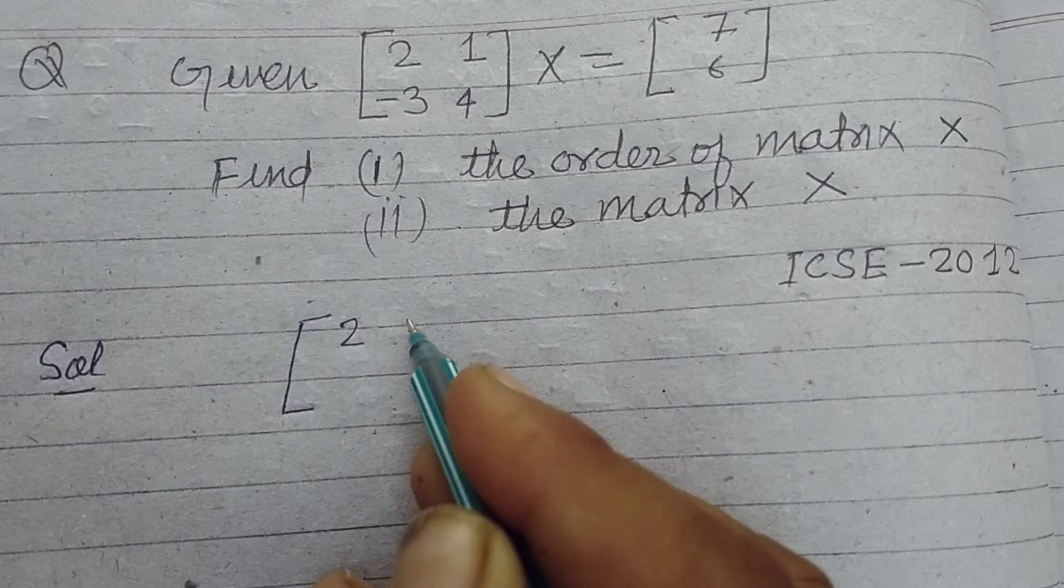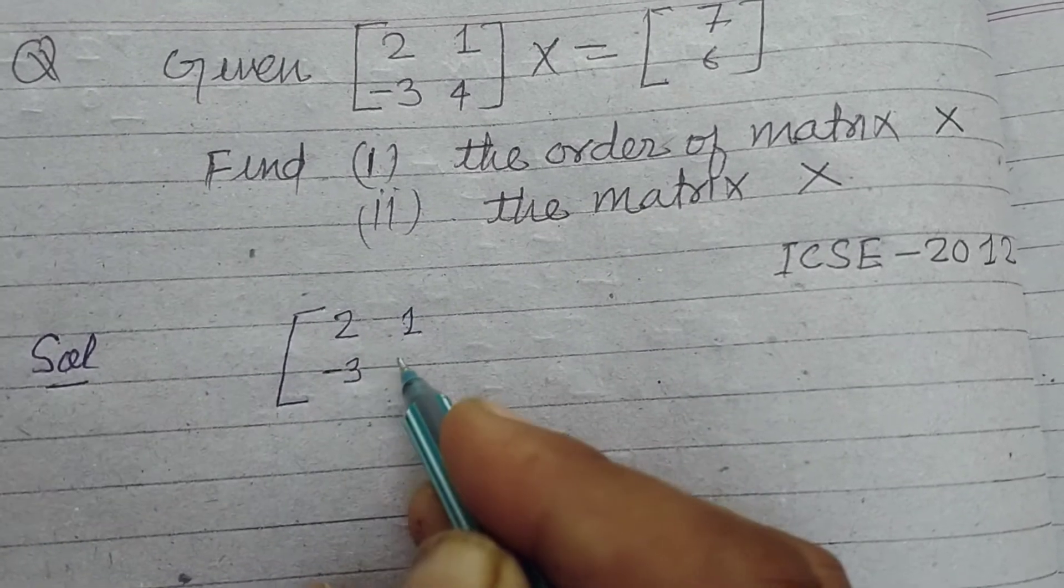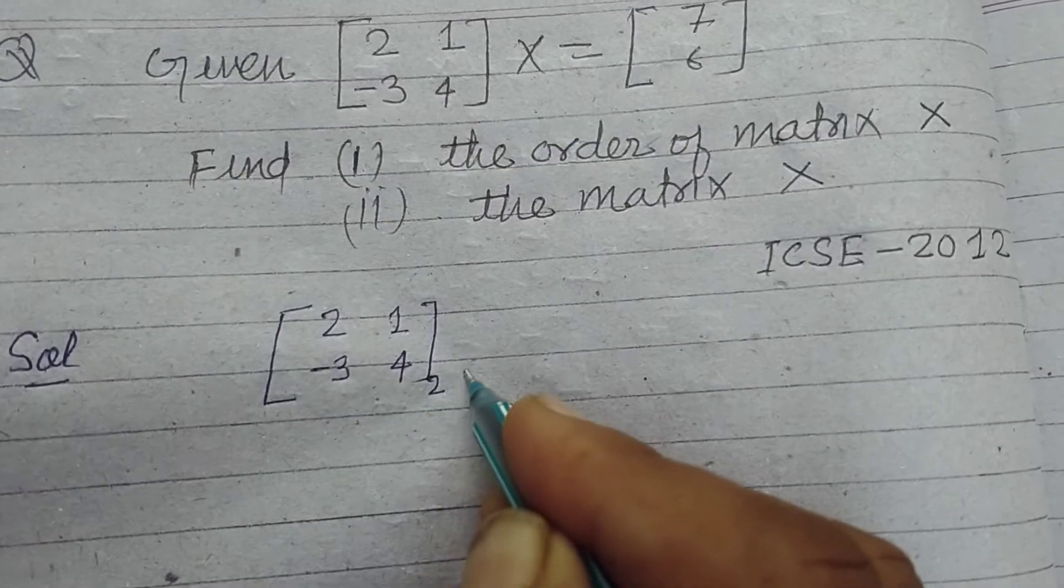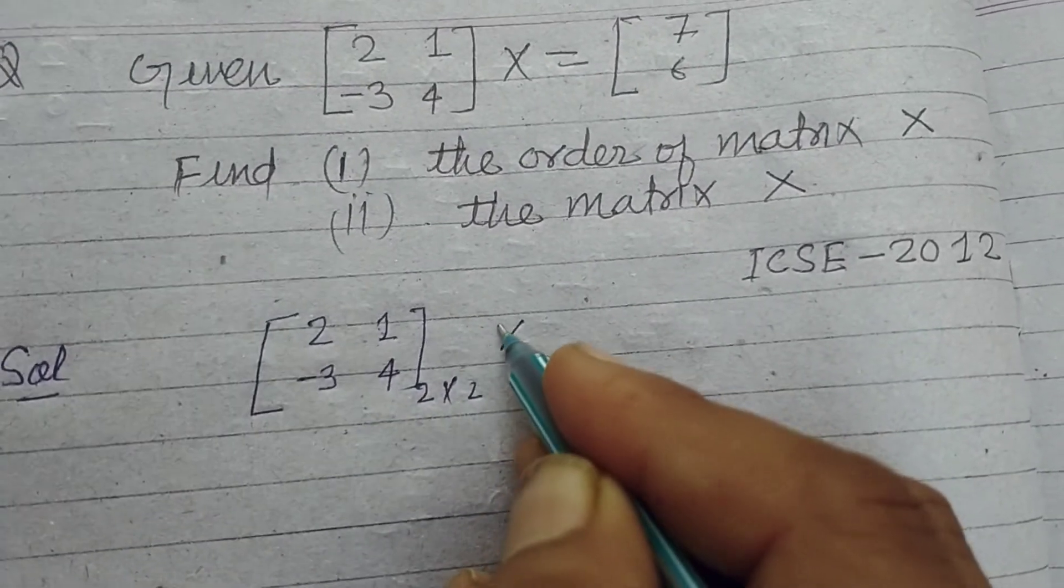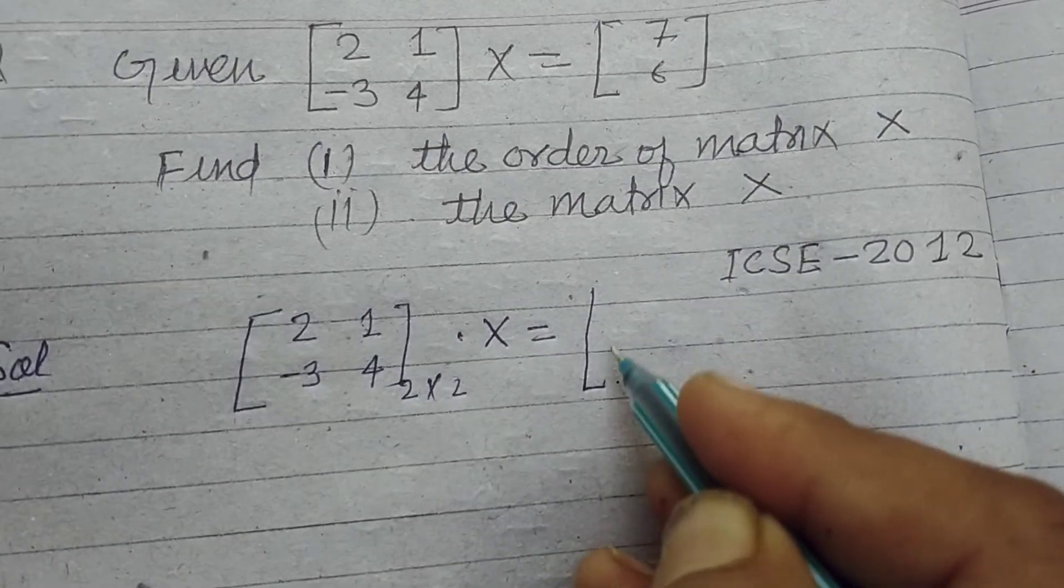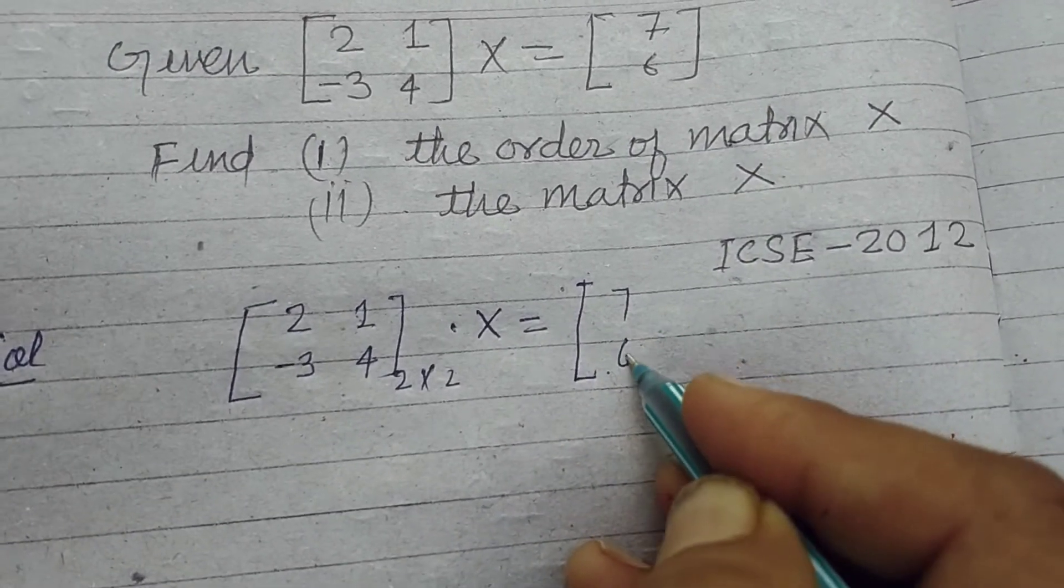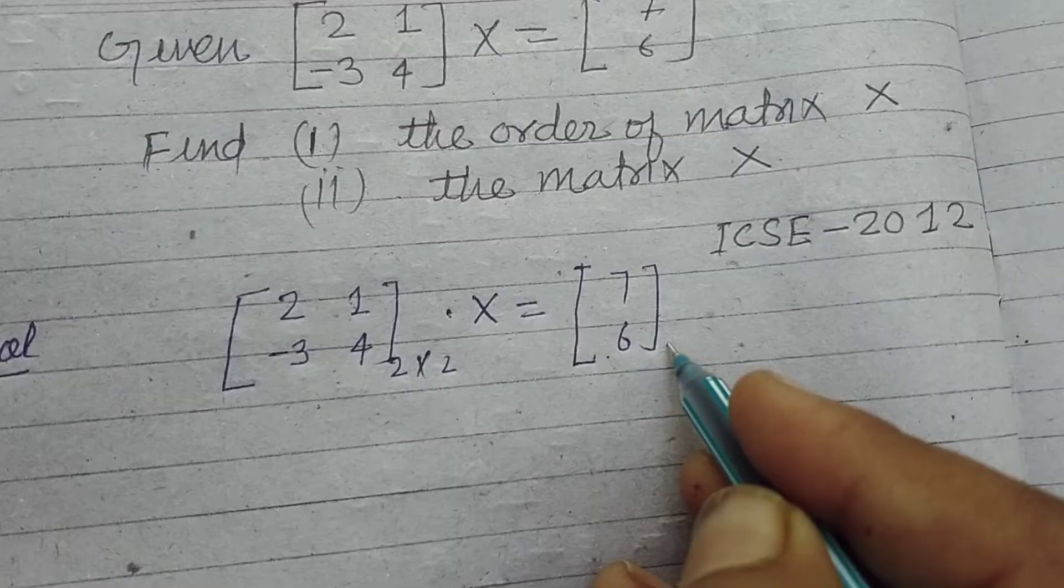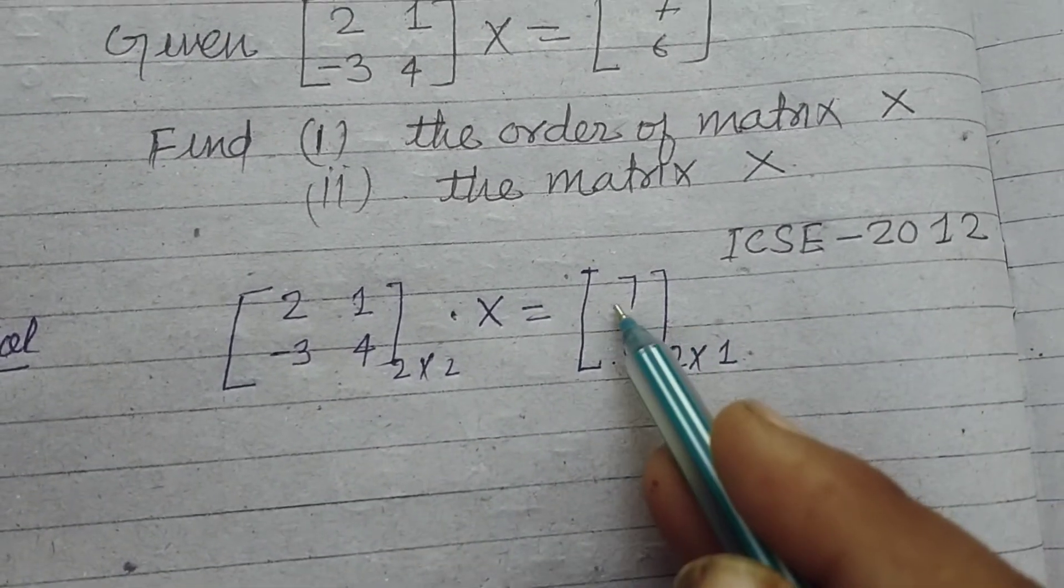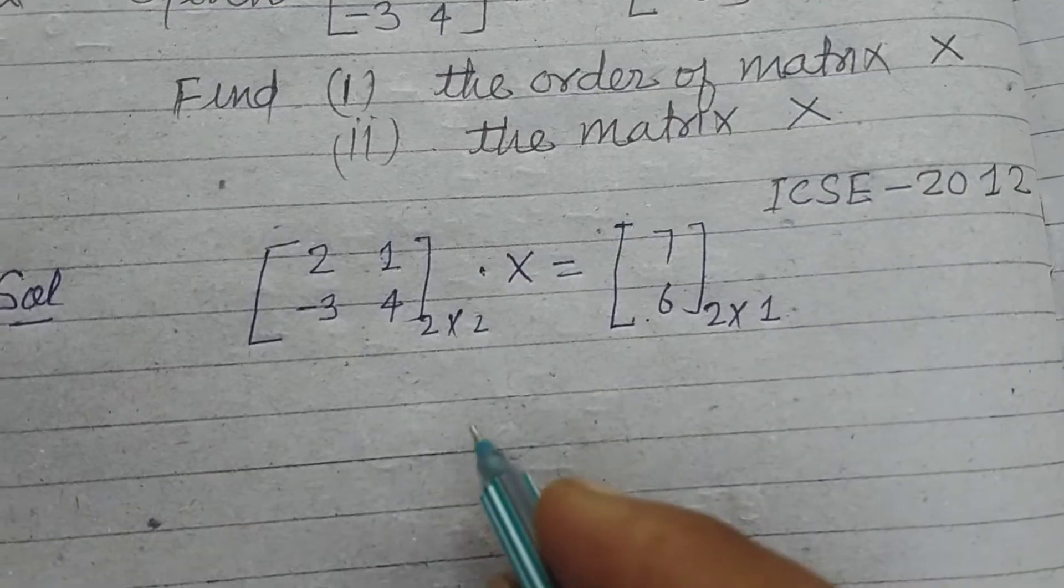So [2, 1; -3, 4] is a matrix of 2 by 2, and it is multiplied with matrix X, and the resultant matrix is [7; 6], so its order is 2 into 1 - two rows, one column.